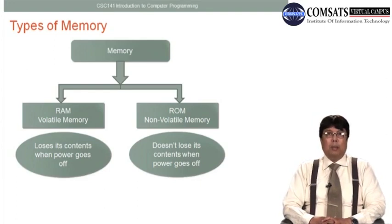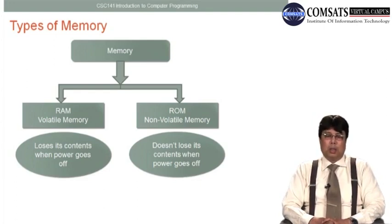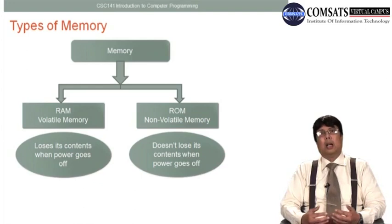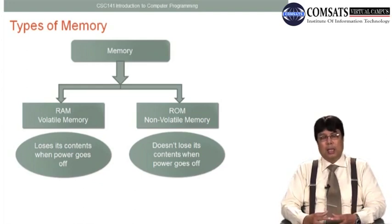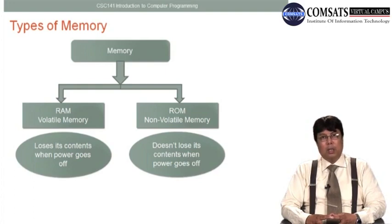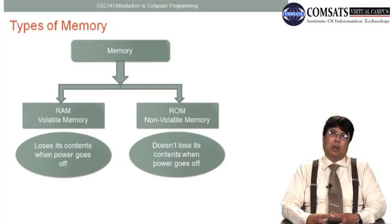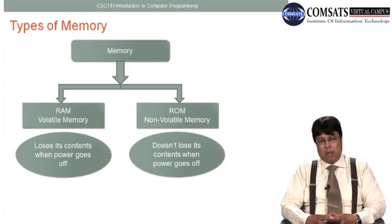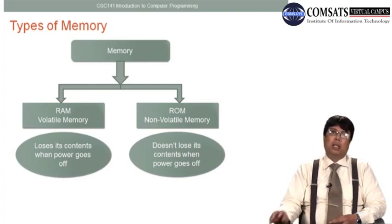You remember we talked about the memory of the computer — the workspace, the archiving space, the storage space. We had categorized the memory of the computer into two parts: volatile memory and non-volatile memory. Volatile memory requires power, so it loses its contents when the power is switched off, whereas non-volatile memory does not require power all the time to maintain its contents. Volatile memory we call RAM, and non-volatile memory we call ROM.